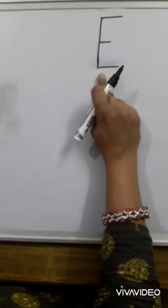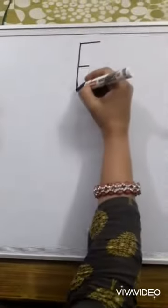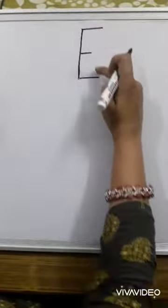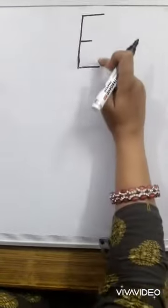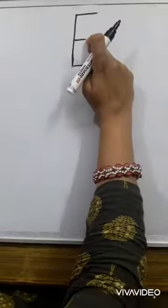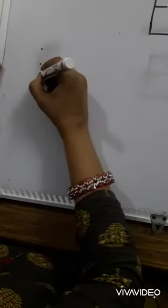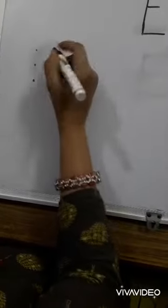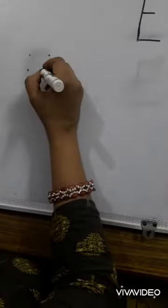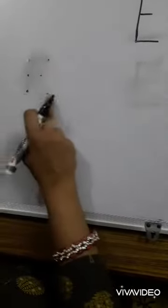Let's write letter E. There is one standing line and three sleeping lines. Two sleeping lines are big and one is small. So, I will put three dots for standing line and one, two and three dots for sleeping line.